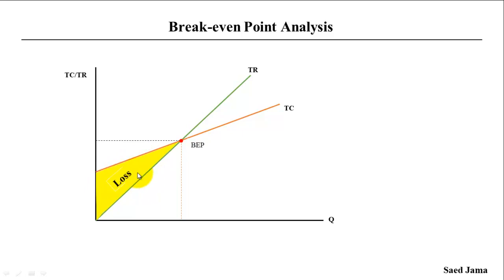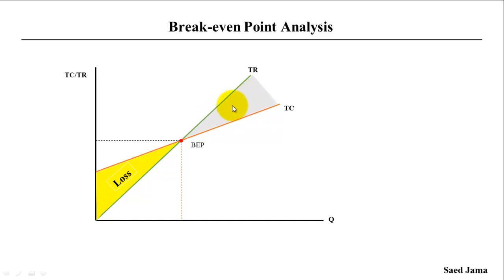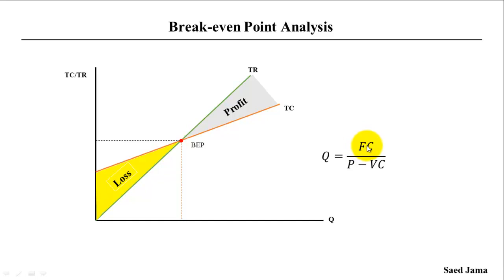Above the break-even point, the total revenue is greater than the total cost, so the difference is profit. Below the break-even point, the total cost is greater than the total revenue, meaning a loss. The break-even point formula is fixed cost divided by selling price minus variable cost. This is a brief introduction.